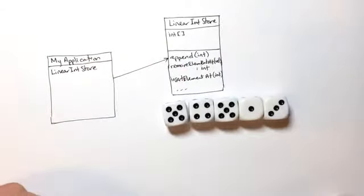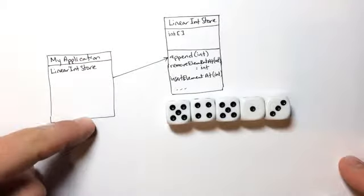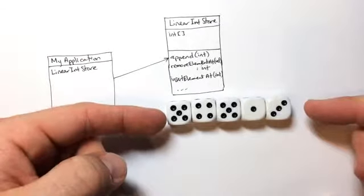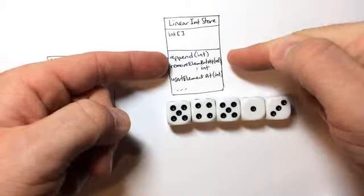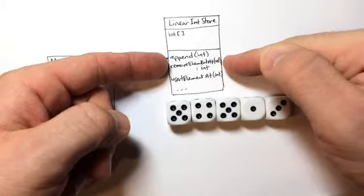The reason we want to do that is that often we'll have an application which needs to keep track of a list, but doesn't want to do all of the hard work of writing all of this code, which maybe lots and lots of different applications are going to use.